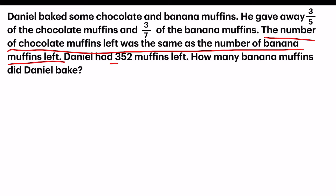Since Daniel had 352 muffins left and the previous sentence says the number of chocolate muffins left was the same as the number of banana muffins left, I can take 352 divided by 2, getting 176.